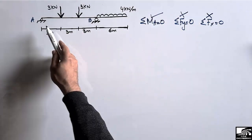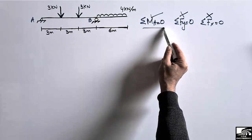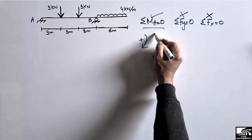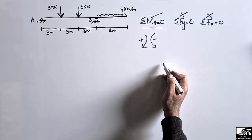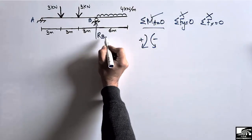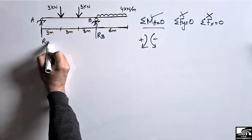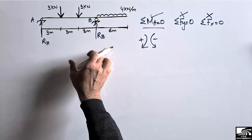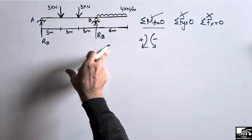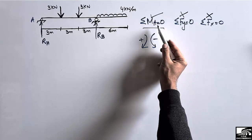Let's take the summation of moments at point A equal to zero. For sign convention, clockwise moments are taken as positive and anti-clockwise moments are taken as negative. Let RB and RA be the two reactions. We assume both reactions are initially acting in the upward direction.